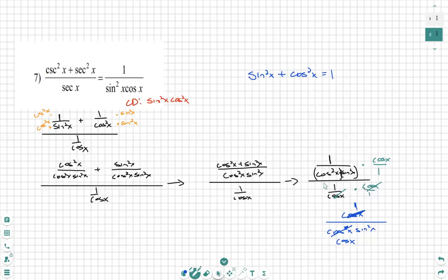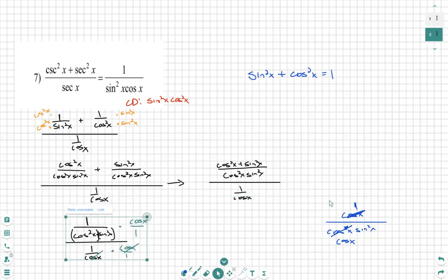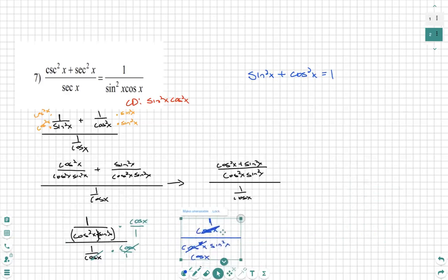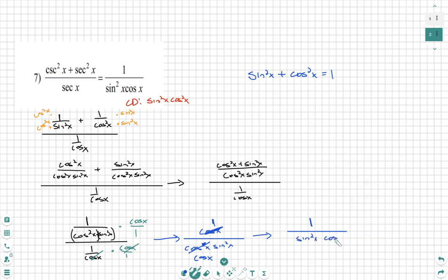And then finally, we have our answer. And we clean it up one last time: 1 over sine squared of x times cosine of x. Because if we look at our answer, that's what it looks like. And we have thus verified that this is a true statement.